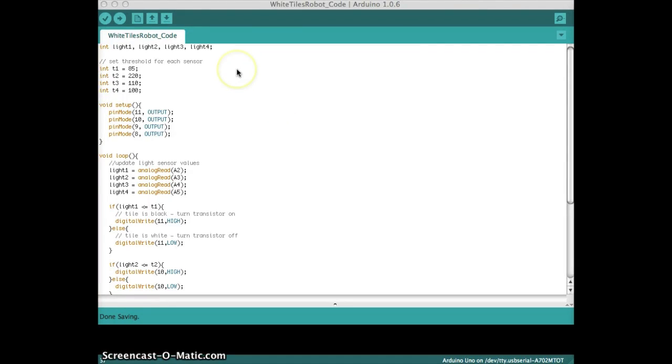If we take a look at the code, it's actually very simple. I first initialized four integers for each of the light sensor values, then four thresholds for each of those sensors. And as you can see, the thresholds are different, but I just had to figure that out experimentally. It wasn't too tough. Then in our void setup, I just have four pin mode outputs for each of the transistor pins.